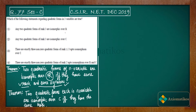We could construct counter-examples but that would be a long process, and since we already know the theorem we don't need to. Now theorem two: two quadratic forms each in n variables are isomorphic over ℂ if and only if they have the same rank. So over the complex field, same rank is sufficient for isomorphism. This means option one is incorrect and option two is correct.